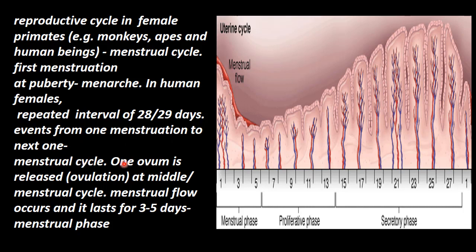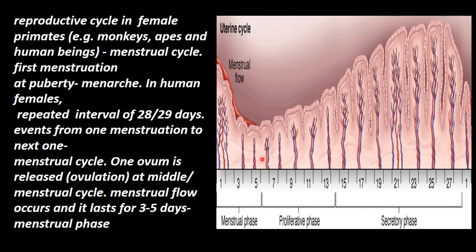At each cycle, one ovum is released. That ovum is released at the middle of the menstrual cycle — not at the time of menstruation. When menstruation occurs, the uterine endometrium inside, the lining sloughs and the blood vessels slough, and that comes out through the vagina as a flow. This is what we call the menstrual flow. It lasts for three to five days and is called the menstrual phase.